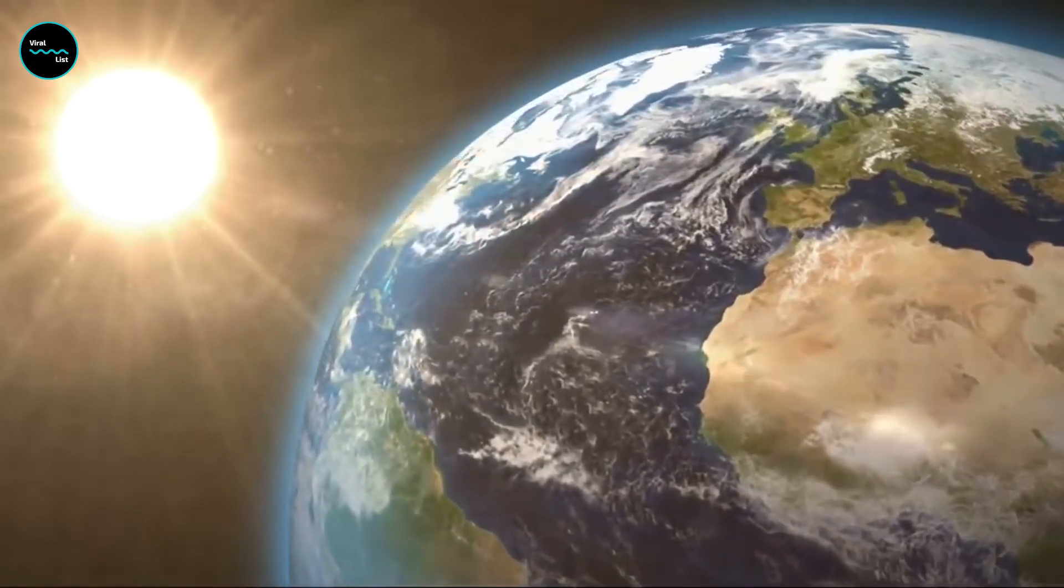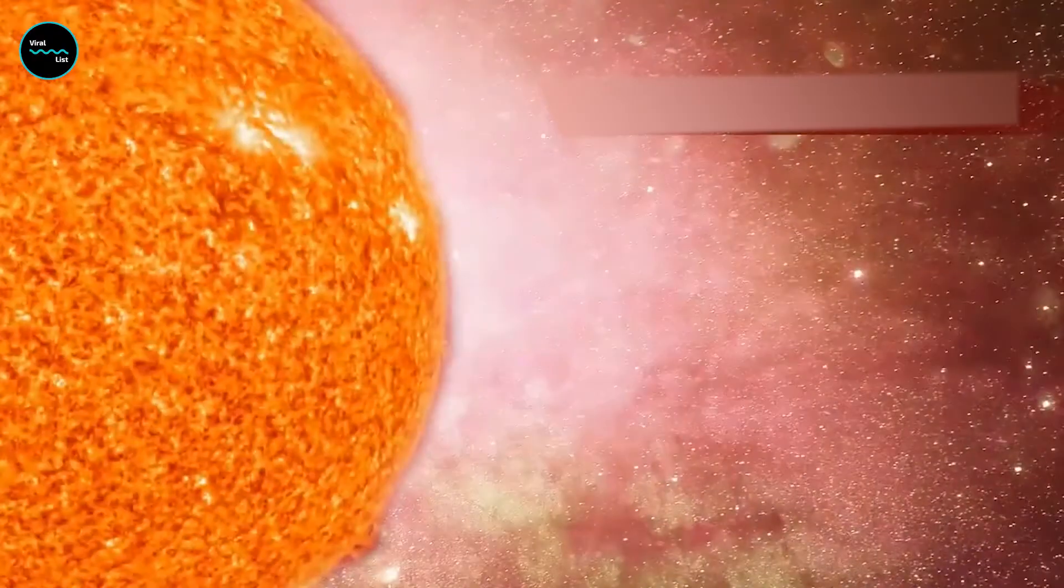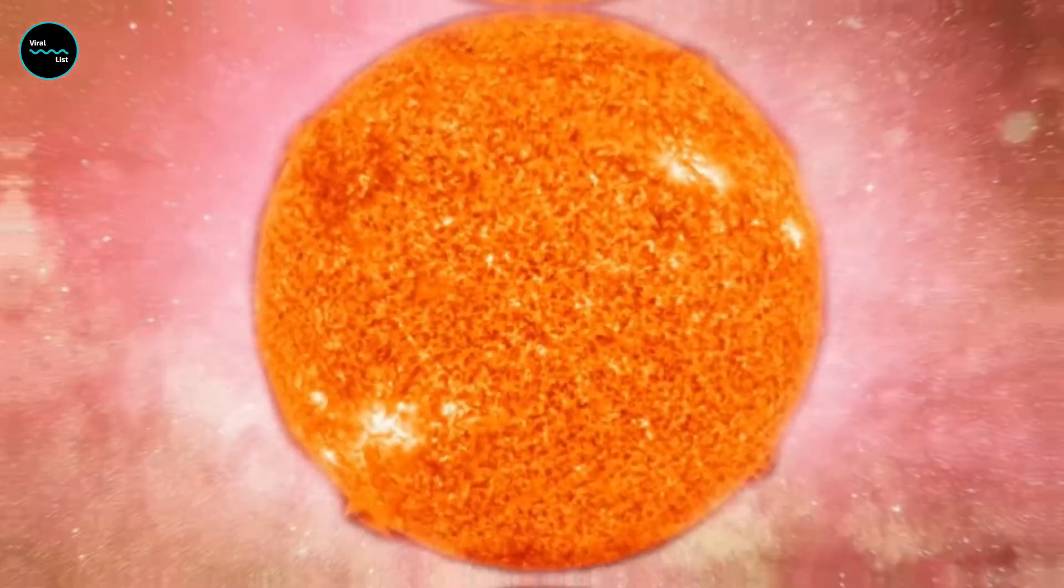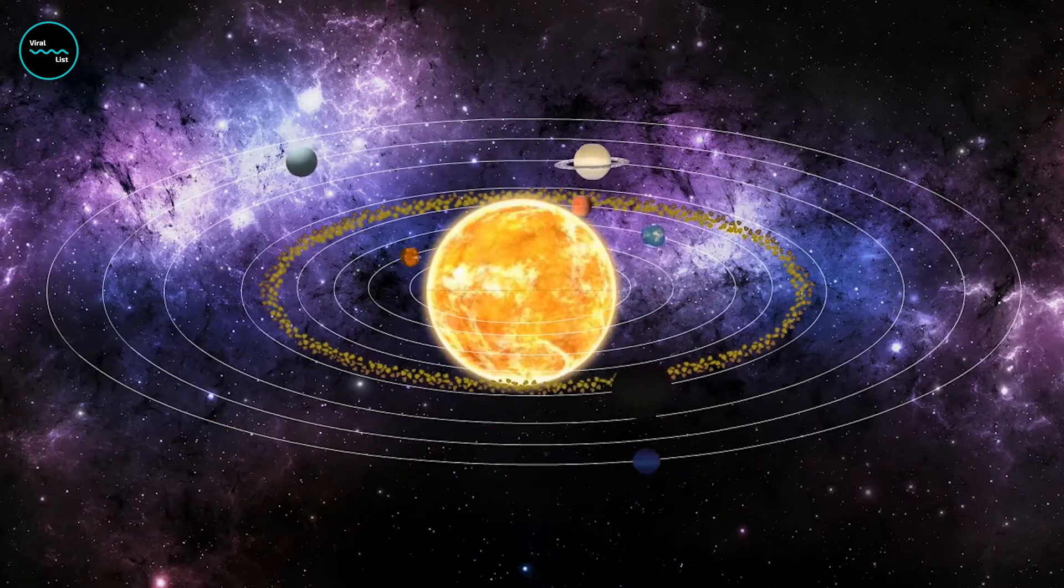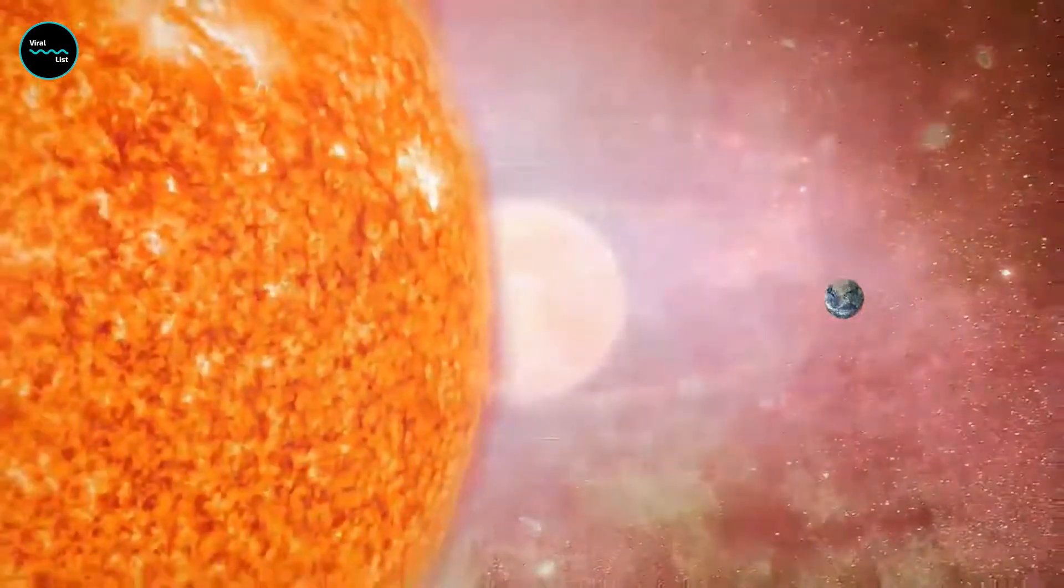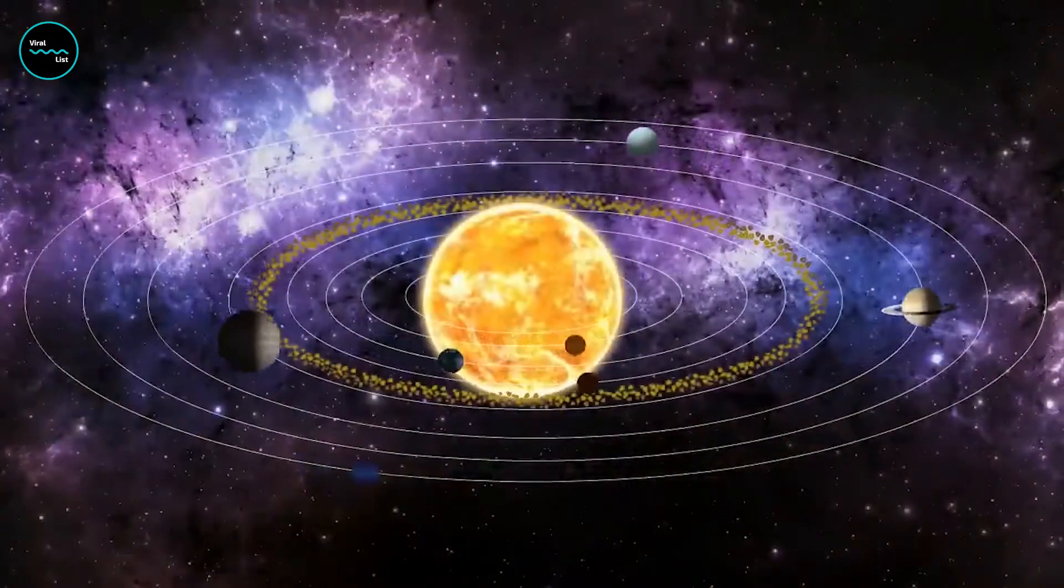Compared to Earth, the sun is enormous. It holds 99.8% of the solar system's mass and is roughly 109 times the diameter of Earth. So how many Earths can fit in the sun? The answer is that it would take 1.3 million Earths to fill up the sun. That's a lot of Earths.